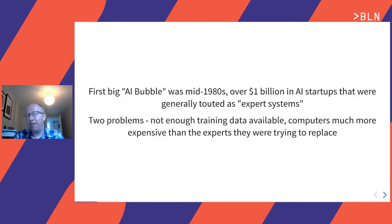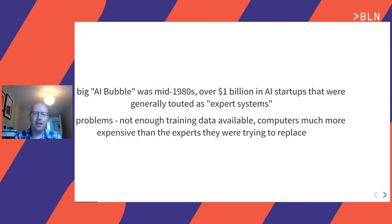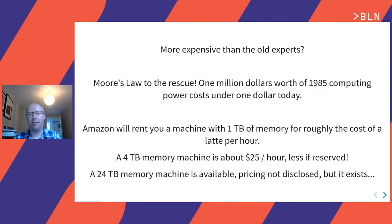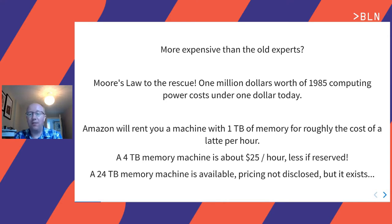We're in a new phase now. Maybe it's a bubble, maybe it's not, but there's certainly a lot of interest. Moore's Law has come to the rescue. In 1985, what used to cost you a million dollars is now under $1 today. Amazon — give them a credit card, off you go with some servers. One terabyte of memory — not storage, memory on a single machine — is about one latte an hour. A four terabyte machine is about $25 an hour if you rent it on the spot, and you can even get a 24 terabyte memory machine from Amazon. So if your ML system needs four terabytes of memory, have a chat with your boss, get accounting approval, and off you go. It's no longer completely impossible.